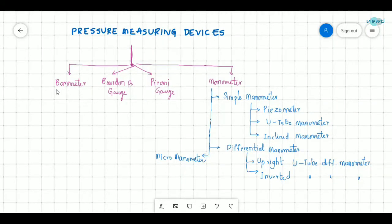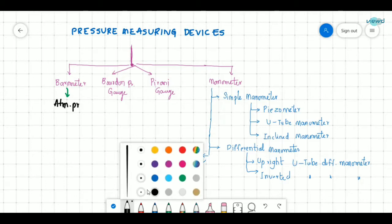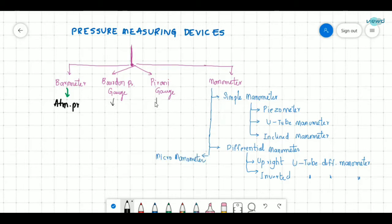The first classification is the barometer, which is used to measure atmospheric pressure. Next is the Bourdon pressure gauge, which is a direct reading pressure gauge used to measure moderate to high pressures. And the Pirani gauge is used to measure vacuum.